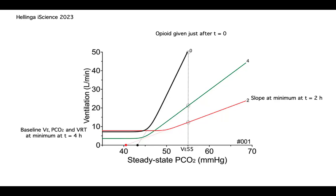Basal ventilation peaks after four hours. So the dynamics of CO2-dependent and CO2-independent ventilation are very, very different. If you want the most sensitive marker — one marker of opioid effect — you need to look at the CO2-ventilation response, which is V55: the ventilation extrapolated to a PaCO2 of 55 mmHg.